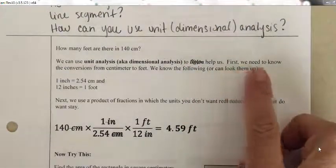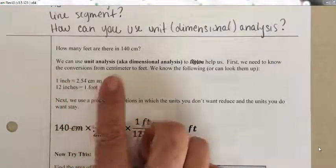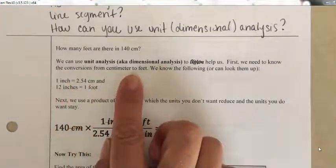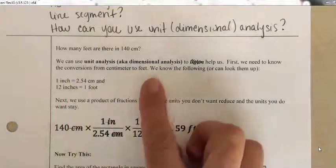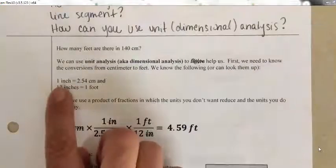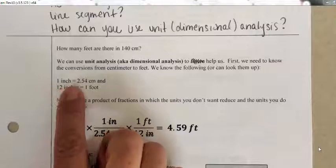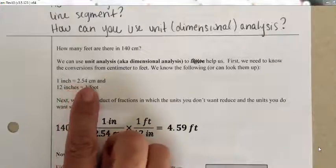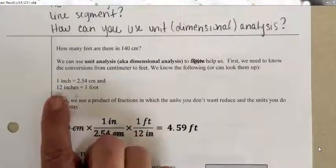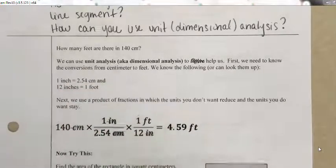First, we need to know the conversions from centimeters to feet. We either know the following or can look them up: 1 inch equals 2.54 centimeters, and 12 inches equals 1 foot. I hope you all know the last one.